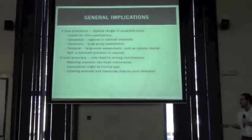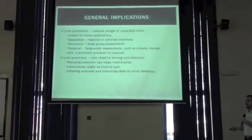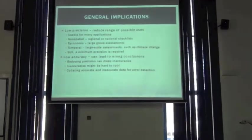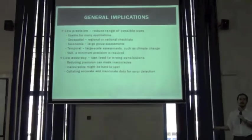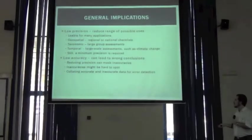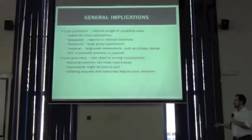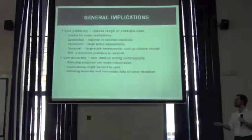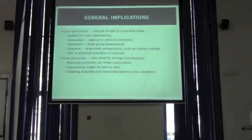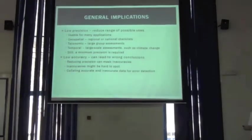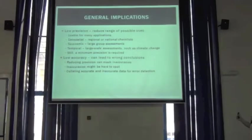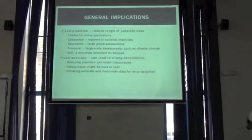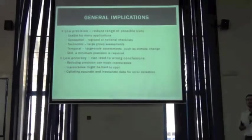Low accuracy is harder to deal with because it can lead to wrong conclusions. One way of dealing with it is to reduce the precision so that the inaccuracies are masked. Inaccuracies by themselves can be hard to spot, as in the date example which is ambiguous. But recently, we have seen some movement in the scientific field that says that merging, putting together good and bad information, can help in detecting the issues and problems with data.